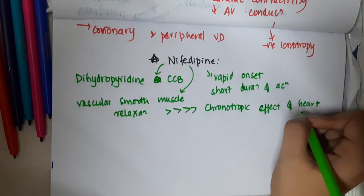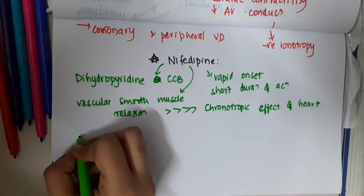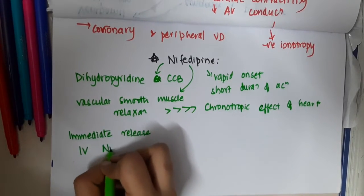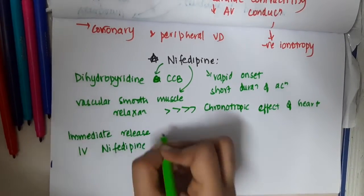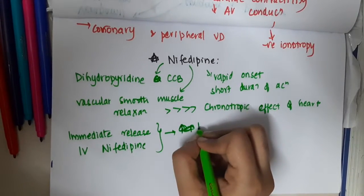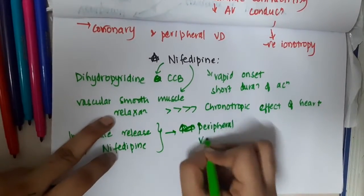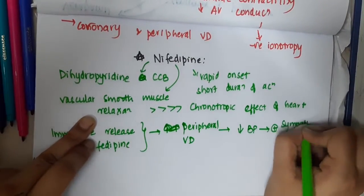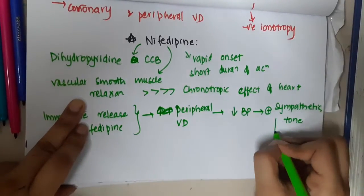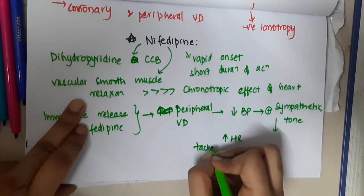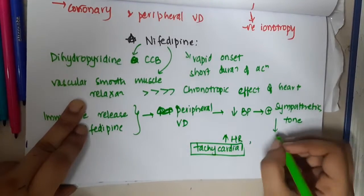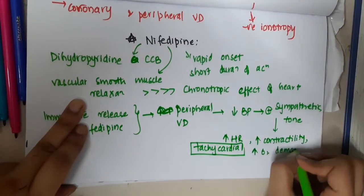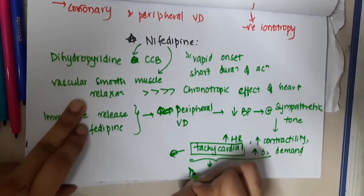If you give immediate release preparations or IV nifedipine, this will mainly cause peripheral vasodilation due to vascular smooth muscle relaxation, and it decreases blood pressure. This activates sympathetic tone, which increases heart rate — that is, tachycardia is seen. It will also increase contractility and increase oxygen demand, and all of these will precipitate angina.